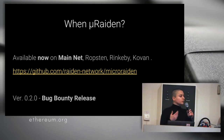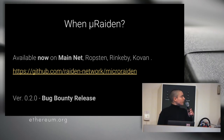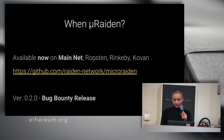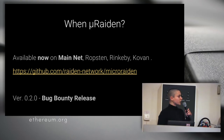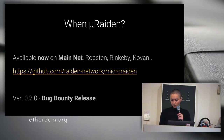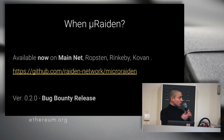MicroRaiden is available now on the mainnet and the testnet: Ropsten, Rinkeby, and Kovan. The version is 0.2 and it's a bug bounty release. After this, please look at the contracts. We had a very successful bug bounty release with version 0.1 — we didn't find any important bugs, but there were some pieces of advice that we took into consideration. So please have a look.